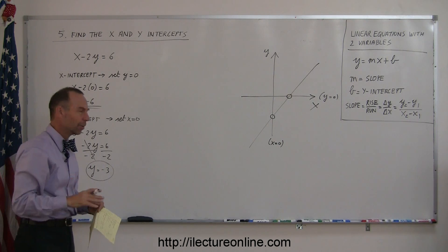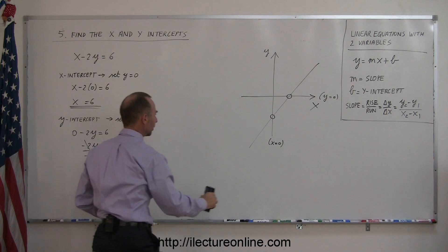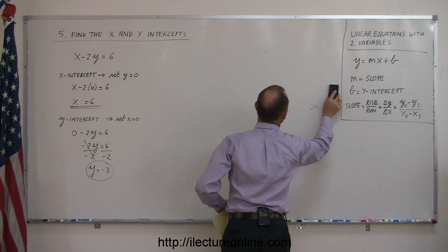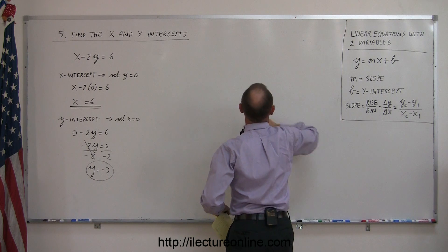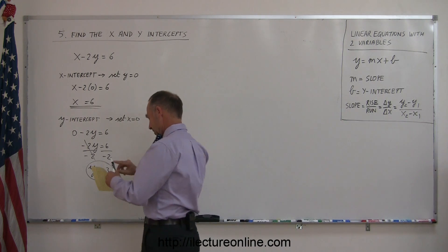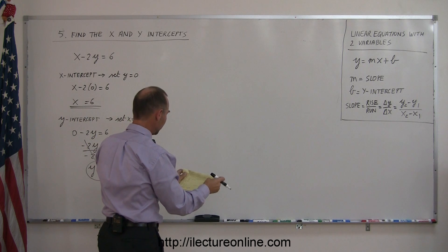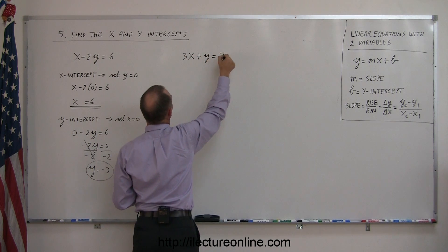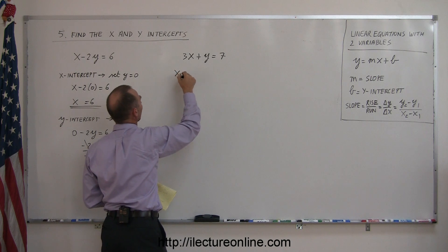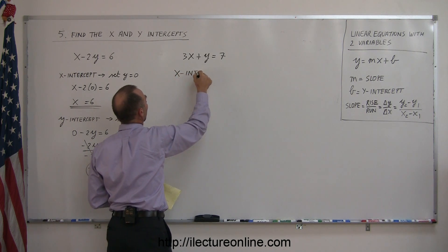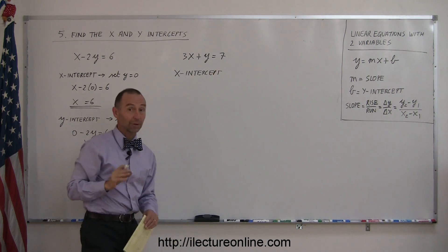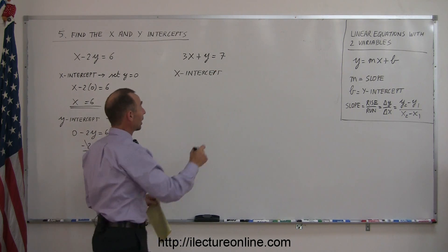Okay. Let's do a couple more of these to get the feel for it. Given the following equation, 3x plus y equals 7. And let's say we want to find the x-intercept. Remember, if you want to find the x-intercept, you set y equal to zero.